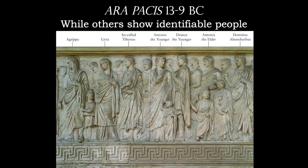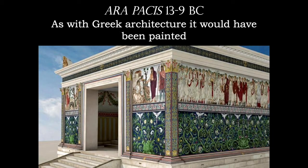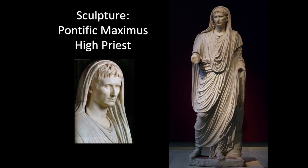Here are a few of the individuals we've been able to identify from the precinct. Just like how Greek architecture would have been painted, the Ara Pacis would have been painted as well — very gaudy colors — and I think it would definitely stand out. Keep in mind that Augustus is also Pontifex Maximus, the high priest. So he is not only leading the Senate in Rome, he is also leading the religion of Rome.